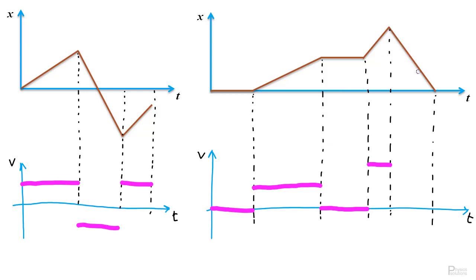The same applies in the last part. The line is going down, so the velocity is negative, but it's going down with the same inclination as the previous part. So the magnitude of the negative velocity equals the magnitude of the previous positive velocity — placed at the same distance below the axis. To summarize: the important steps to build the velocity versus time graph from the position versus time graph are, first, the slope of the line, which tells you the magnitude and sign of the velocity; and second, how straight the line is — if the x versus t line is straight, the velocity is constant. In the next exercise, we'll go from velocity versus time to acceleration versus time.